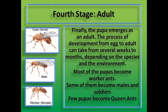Fourth stage: adult. Finally, the pupa emerges as an adult. The process of development from egg to adult can take from several weeks to months, depending on the species and the environment. Most of the pupas become worker ants, some become male and soldier ants, and a few pupas become queen ants.